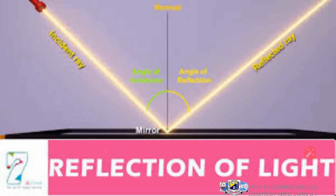Now the light coming from the source, which is on your left-hand side as you can see, is called the incident ray, while the light that is reflected by the mirror is called the reflected ray. In between these two you can draw a straight line, and if you measure these two angles, the first angle is called the angle of incidence and the second is called the angle of reflection. You discover that both of them are equal.